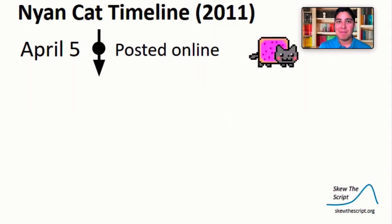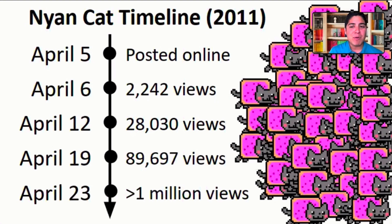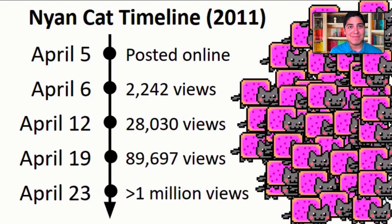Let me give you a little bit of background first. Let's take a look at our timeline here in 2011. On April 5th, our famous video gets posted online. By April 23rd, we had over 1 million views. And since we're mathematicians, of course we want to accurately model this data. But when I look at it, I would just say that's a lot of cats.